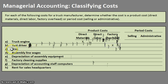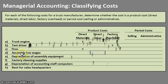Next are tires. Tires are a pretty significant part of manufacturing a truck, so that is another product cost and it will be a direct material. Now for assembly line wages — the employees on the line actually assembling the truck — this is definitely in the factory, so it's a product cost, and they are directly involved with manufacturing the truck, making it a direct labor cost.